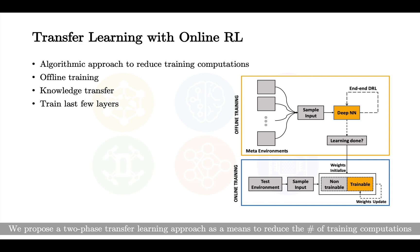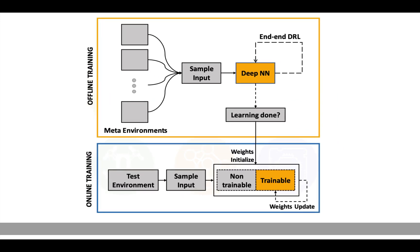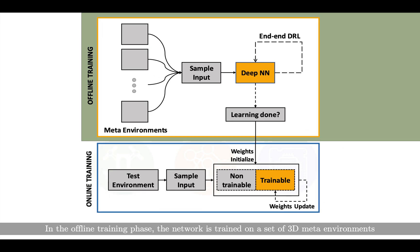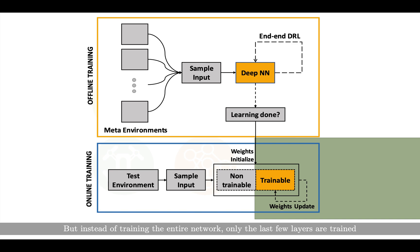We propose a two-phase transfer learning approach as a means to reduce the number of training computations without compromising on the autonomous navigation performance. In the offline training phase, the network is trained on a set of 3D meta environments. Once trained, the learned weights are used as an initializer for the network to be trained in the test environment. But instead of training the entire network, only the last few layers are trained.